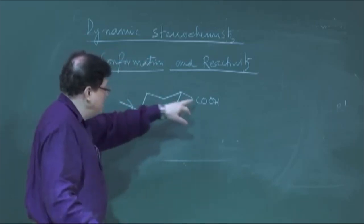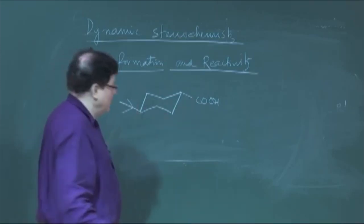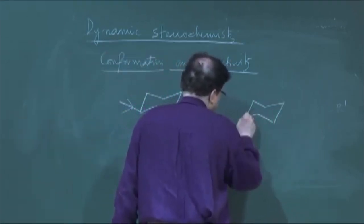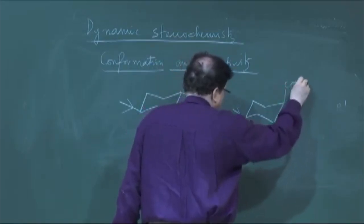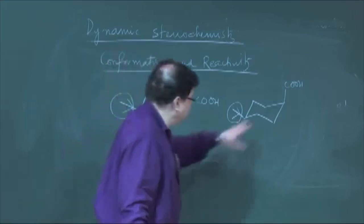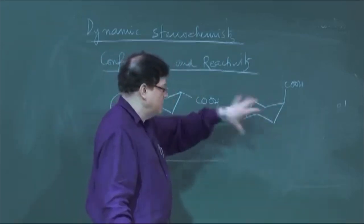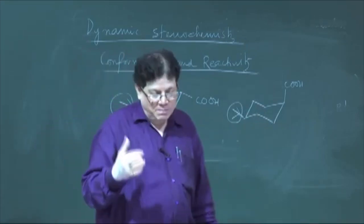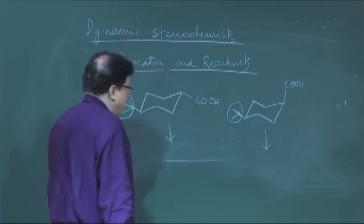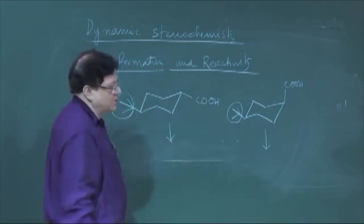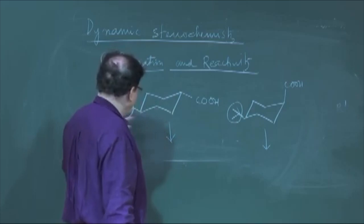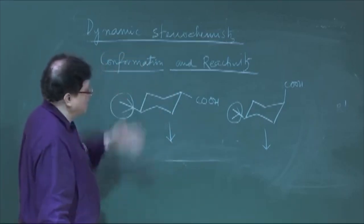Hassel was studying the pKa of cyclohexane carboxylic acids. He took one molecule where the carboxy group is in the equatorial position and another where the carboxy is in the axial position. In order to lock the system — so there is no interconversion between axial carboxy and equatorial carboxy — a tertiary butyl locking group was used, since it prevents the molecule from flipping. He was trying to measure the pKa. Interestingly, what he observed is that the pKa of the two compounds are first of all not the same.